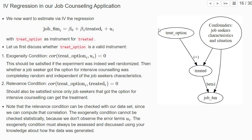Whether a jobseeker has the option for intensive counseling was randomly assigned, so 'treat option' is our instrument. Since it's randomly assigned, it should be uncorrelated with the error term u_i, which incorporates other characteristics of the jobseeker like motivation, ability, and current situation — which could affect job outcomes.